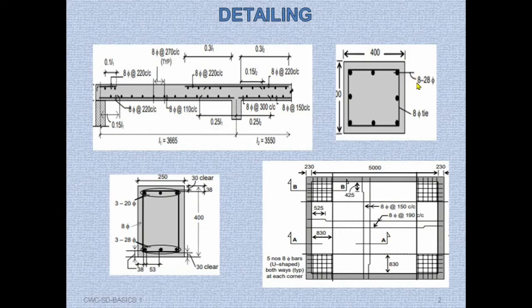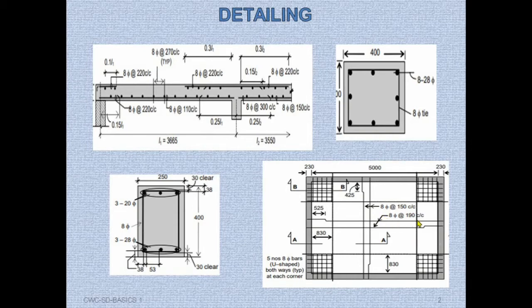This is a column section. Here you can see '8-28Φ' means 8 numbers of 28 mm dia bars are placed. In this beam section, three numbers of 28 mm dia bars are placed, and here three numbers of 28 mm dia bars are placed. In this two-way slab detail, 8 mm dia bars are placed at a center-to-center distance of 150 mm in one direction and 190 mm in the other. In all these drawings, reinforcement bars are marked with a diameter and their corresponding spacing or numbers.